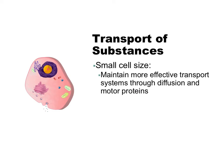A second factor is the transport of substances. Different substances move inside the cell by either the process of diffusion or by motor proteins. However, diffusion over large distances is both slow and inefficient. So by maintaining a small cell size, it's much more effective to transport substances throughout the cell, either by diffusion or motor proteins.